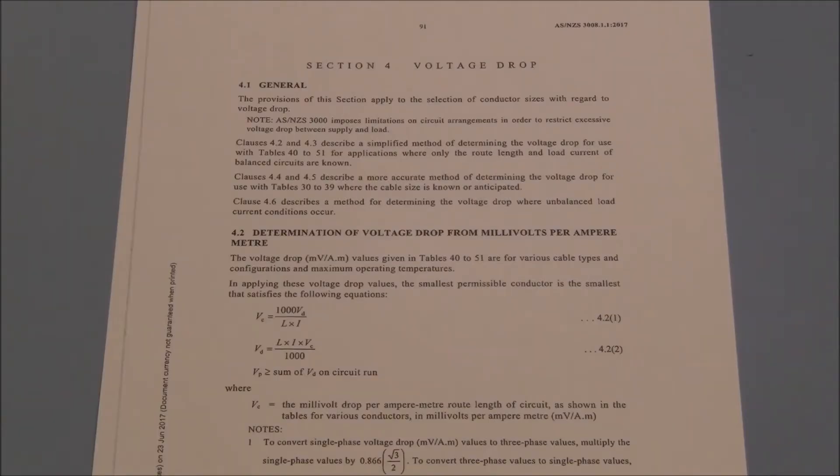Section 4 of AS3008 lists a number of methods relating to voltage drop. We will be concentrating on the millivolt per amp-metre method.